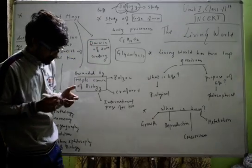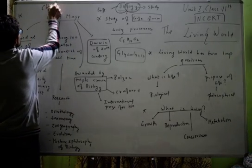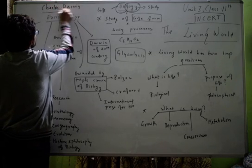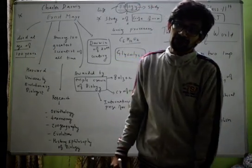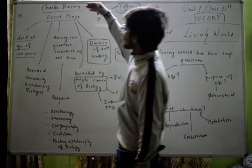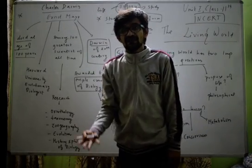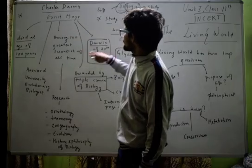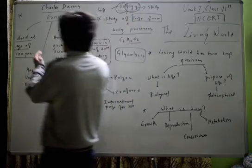He is called Darwin of 20th century just because you must know about this particular famous personality - Charles Darwin. Charles Darwin is basically called father of evolution. He gave the theory of natural selection, and Ernest classified this theory of natural selection into various sub-theories. That's why he is considered as the Darwin of 20th century.